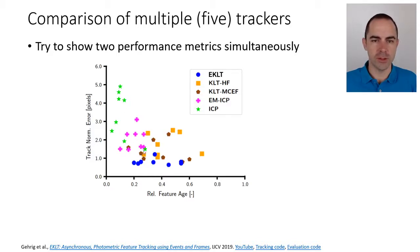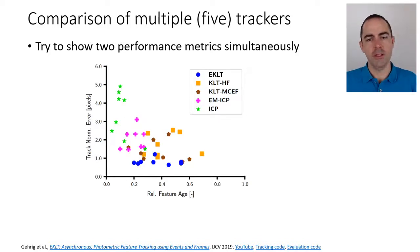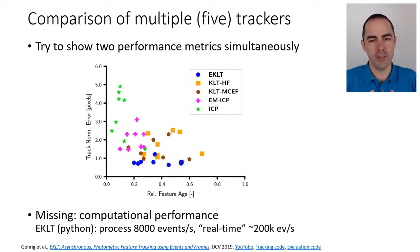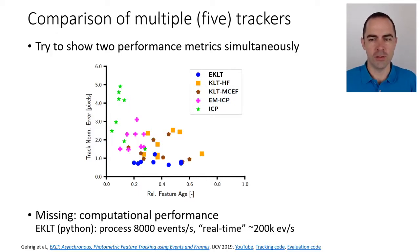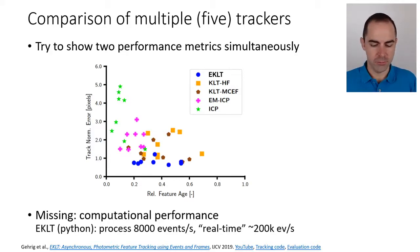Feature age for eKLT is also quite decent across different scenes. Each dot on the plot represents one of the eight sequences. What is missing is a third axis for computational performance. Currently eKLT has a Python version processing only about a thousand events, whereas real-time processing for a DAVIS 240C (240x180 resolution) could require around two hundred thousand events per second depending on scene texture and edges.